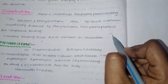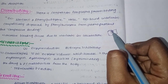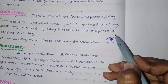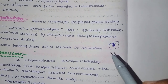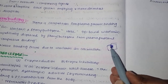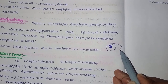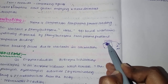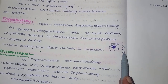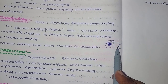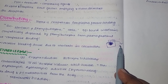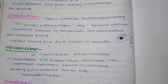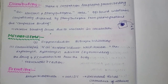Phenylbutazone is very competitive for the receptor site. The warfarin is already binding at the protein site, but phenylbutazone competitively displaces it. The displaced warfarin then binds to tissue protein and its activity starts — blood thinning activity increases significantly.